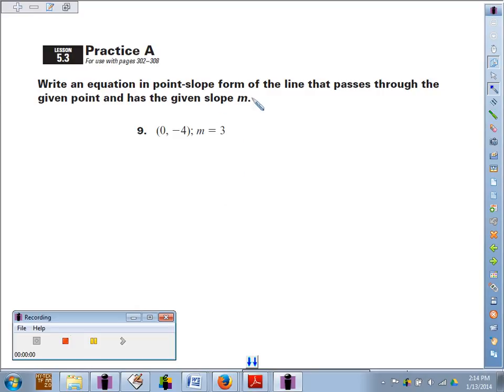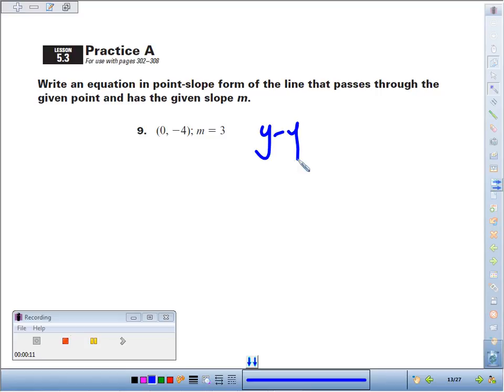Number 9, we're going to write an equation in point-slope form for the line that passes through this point and has a slope of 3. So we just follow our pattern for point-slope: y minus the y-coordinate equals slope times x minus the x-coordinate.